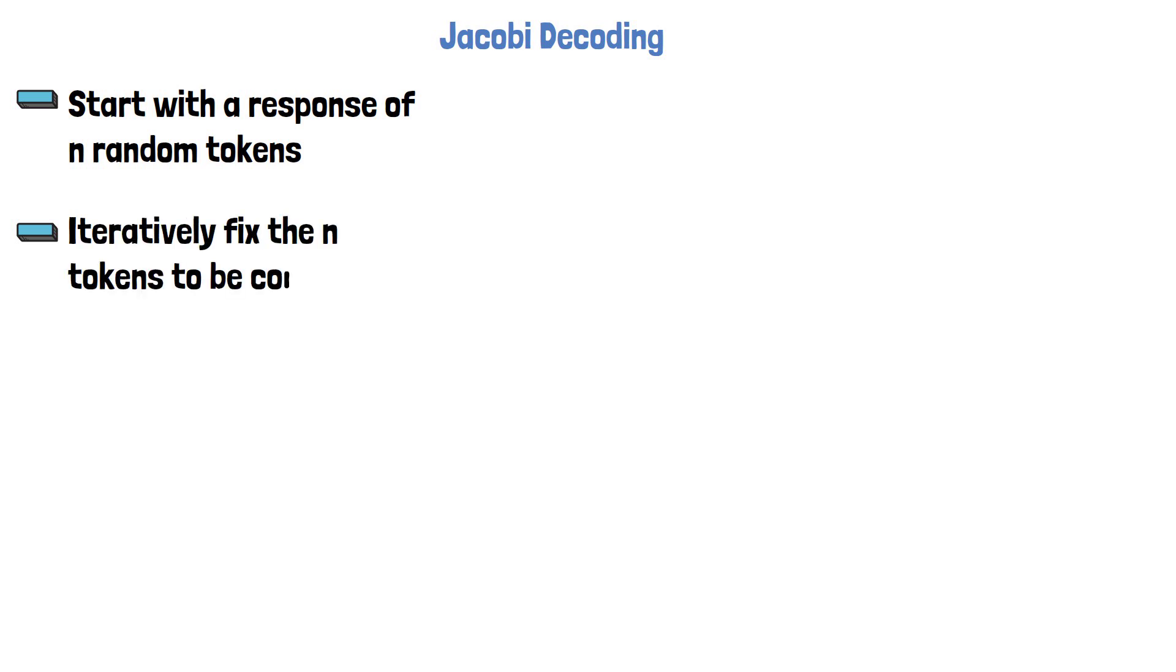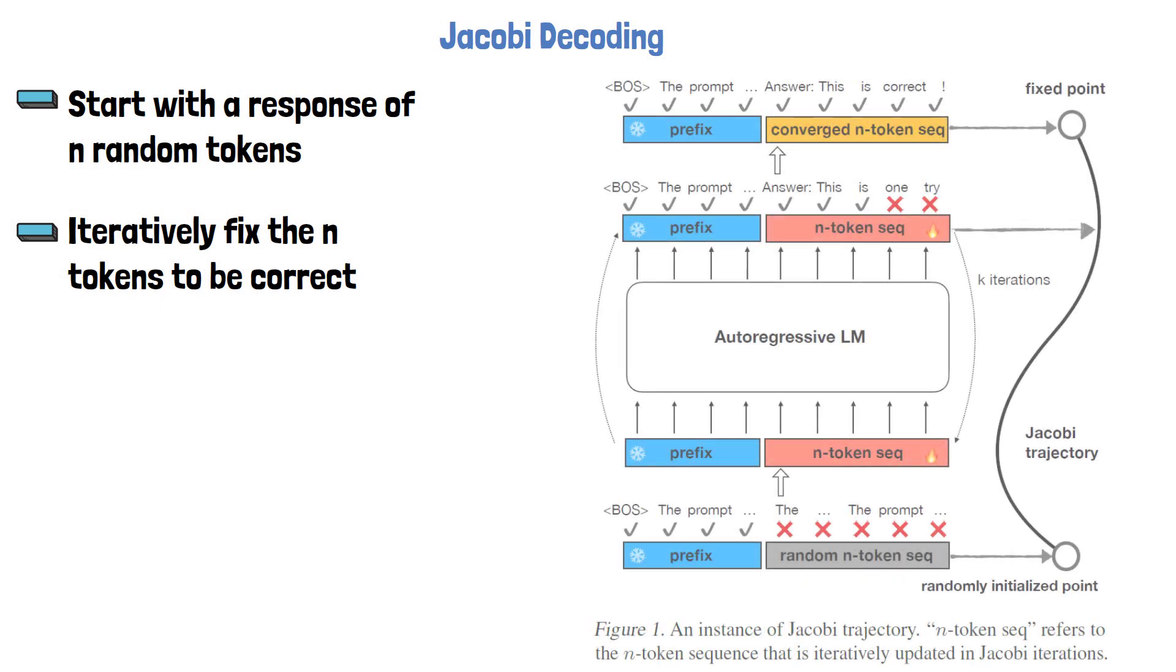The path between the random starting point and the final response is called the Jacobi trajectory. To explain it we use the following figure from the paper. At the bottom we can see the prompt in blue and the initial random response sequence in grey, where each token is marked with a red X, since it is a wrong prediction at this stage.